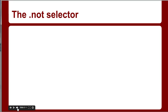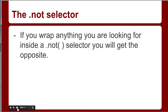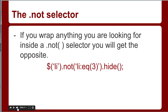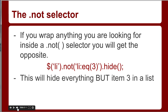There's also the not selector, which is really handy. Anything you're looking for — if you want the opposite of that — you can wrap the entire expression inside a not selector. For example, `li:not(li:eq(3)).hide()` basically means hide everything but item three in the list. On its own `li:eq(3)` looks for only item three, but wrapping it in not gives the opposite — everything except item three.